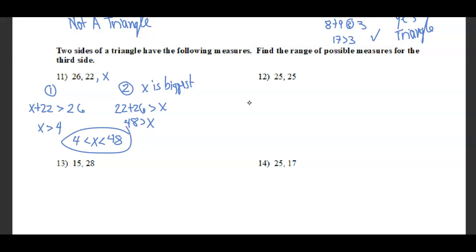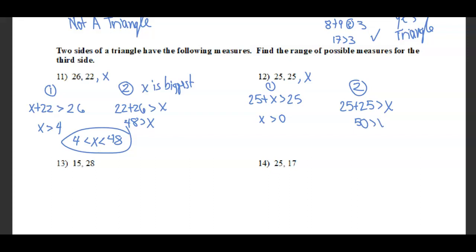For two sides of 25 and 25: if x is the smaller side, 25 plus x must be greater than 25, so x is greater than 0. If x is the biggest, 25 plus 25 must be greater than x, giving 50 is greater than x. So x must be greater than 0 but less than 50.